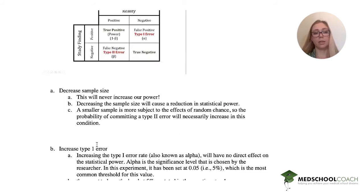If we increase type 1 error, and to remind us, type 1 error is finding a positive finding when in reality the answer is negative. So that's a false positive. And that's alpha. So increasing type 1 error, also known as alpha,